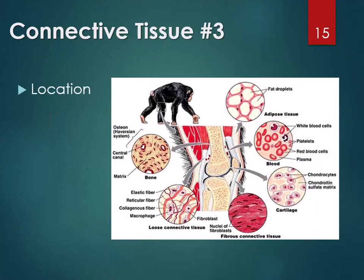Connective tissue is found all over the body — it's the most abundant. The matrix defines connective tissue: in blood the matrix is liquid; in bone the matrix is ossified or mineralized fibers making it very hard. Adipose tissue, cartilage, bone, tendons, ligaments, loose connective, and dense connective tissue are all part of the connective tissue family.